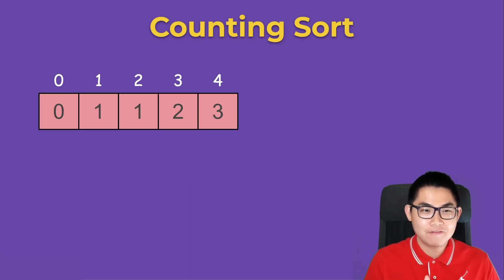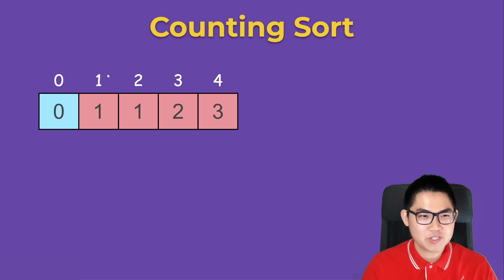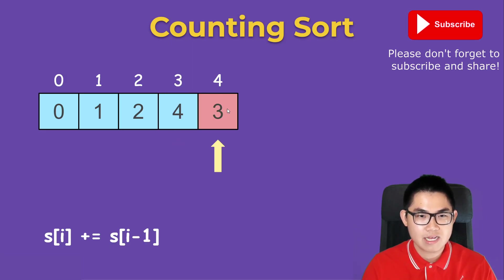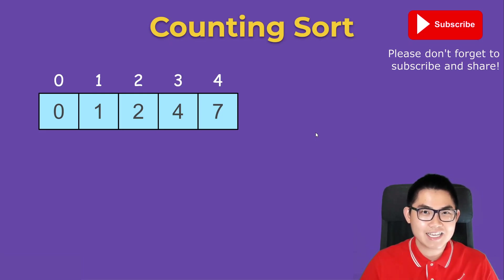Now let me show you the second, fast and efficient way of finding the prefix sum. Starting from our frequency array, we begin at the second value and take the current value plus the previous one. One plus zero is one. Then one plus one is two. Then two plus two is four. Then three plus four is seven. That gives you the same prefix sum array efficiently.